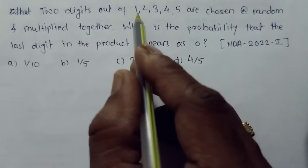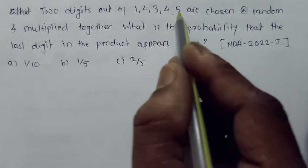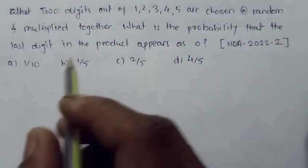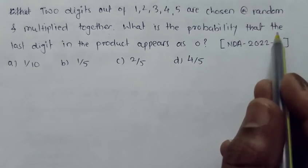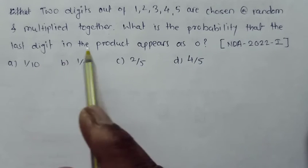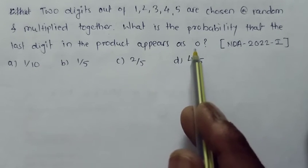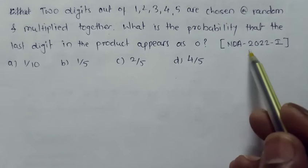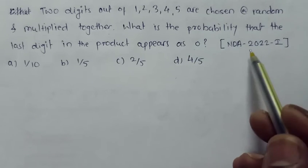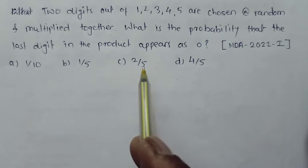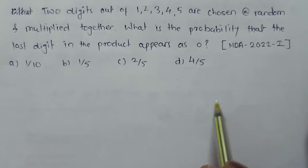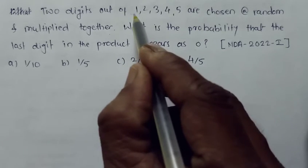Two digits out of 1, 2, 3, 4, 5 are chosen at random and multiplied together. What is the probability that the last digit in the product appears as zero? This question was asked in NDA 2022, first part. The options are 1/10, 1/5, 2/5, and 4/5.